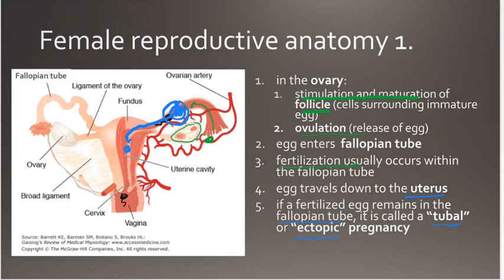And obviously, it's not a viable pregnancy for the embryo itself because it's not inside the endometrial lining where it's going to get nutrients.